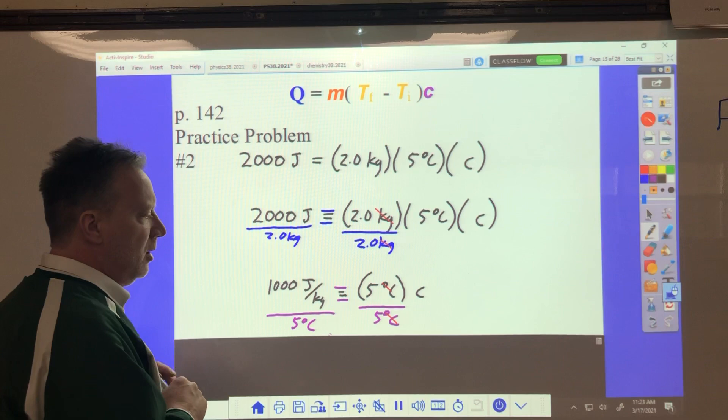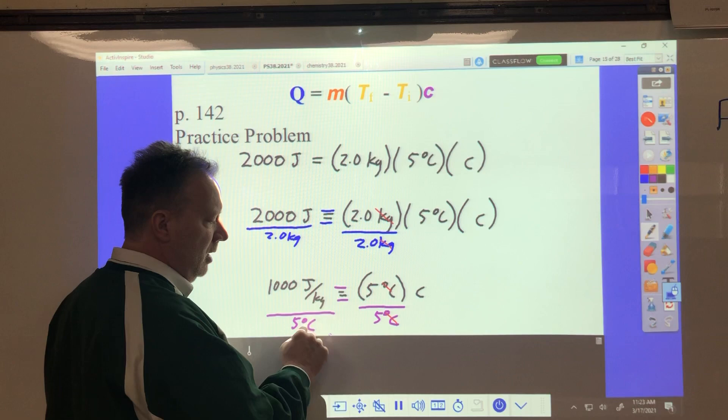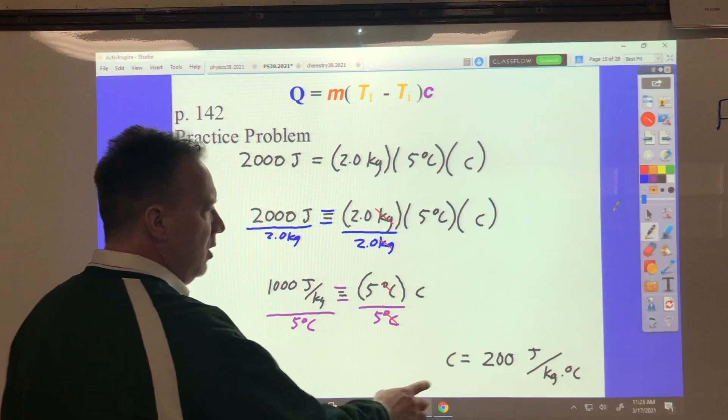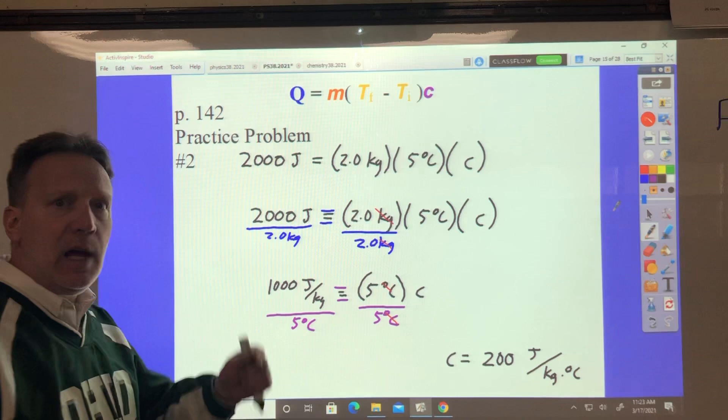Now, 1,000 divided by 5 is 200. But look at my units. I'm going to have joules over kilograms, and then this is in the denominator. So the degree Celsius will join the kilograms in the denominator. So it'll be 200 joules per kilogram times degrees Celsius, and that's the right unit for C. Last question. Last problem.